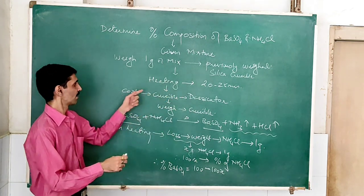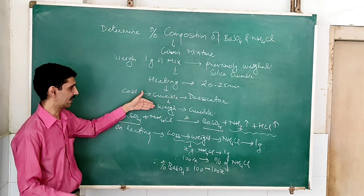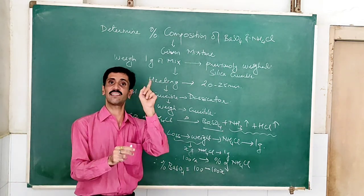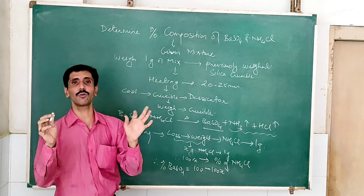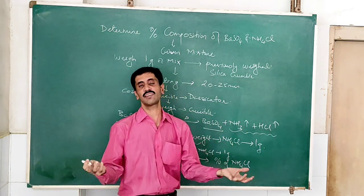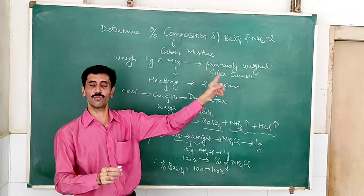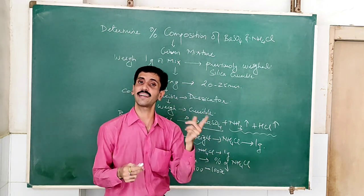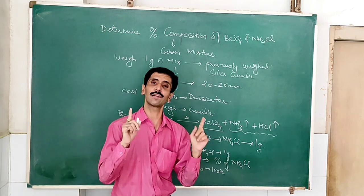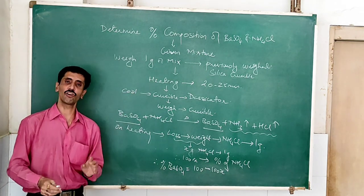After heating, cool it in a desiccator, and then weigh the crucible again. So there are going to be two weighings: one before heating and the other after heating. Barium sulfate remains as it is because it is thermally stable. Ammonium chloride completely decomposes into volatile components — ammonia and hydrogen chloride gas — so obviously there will be a loss in weight. That loss in weight directly corresponds to the amount of ammonium chloride in one gram of the mixture. Multiply by 100 to get the percentage of ammonium chloride, and subtract from 100 to get the percentage of barium sulfate.